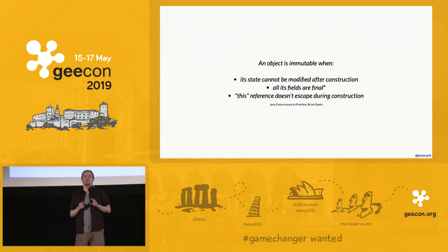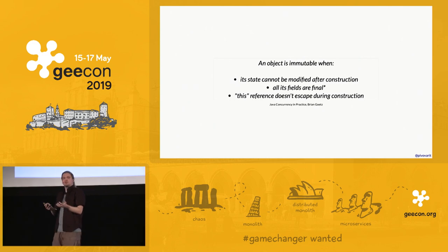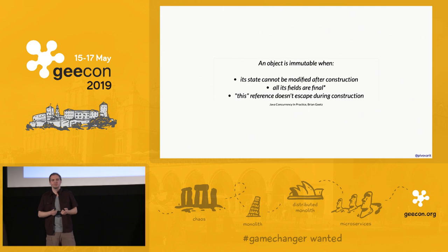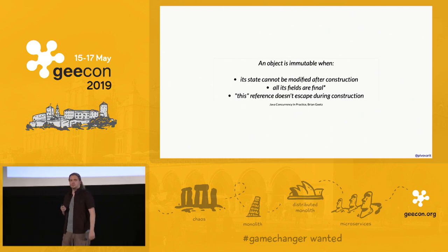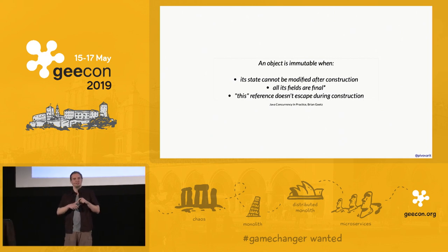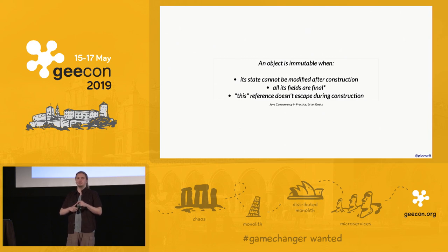Let's go back and revise what immutable means, using the words of Brian Goetz from 'Concurrency in Practice.' An immutable object is one where its state cannot be modified after construction, all its fields are final, and the 'this' reference doesn't escape during construction — because other threads could otherwise observe it in an invalid state.